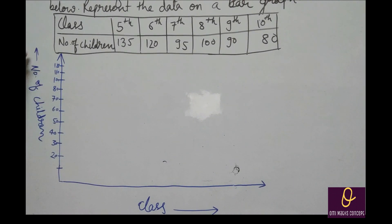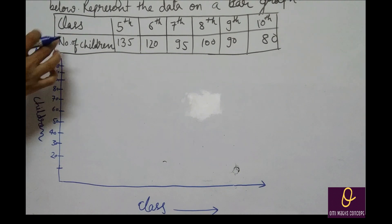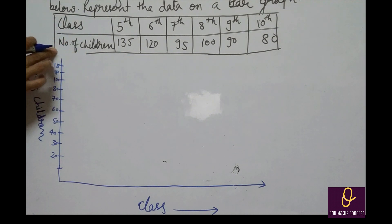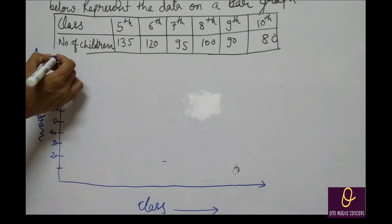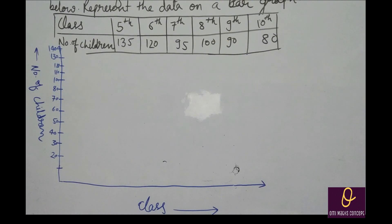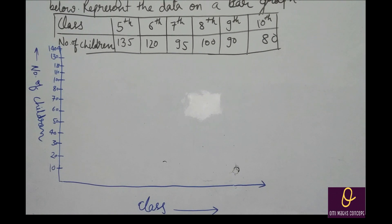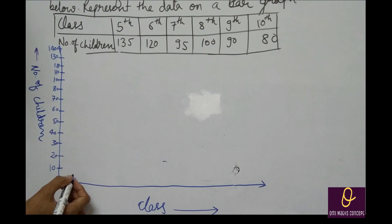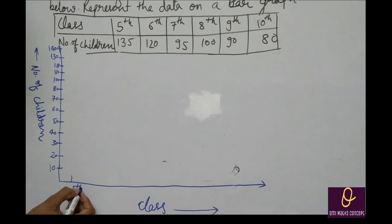आपके पास उपर और भी space मिलेगा. 135 है तो 140 तक चाहिए — 130 and 140. जब आप draw करेंगे: 10 से start किया, 10, 20, 30, 40. यहाँ पर आपको classes लेनी हैं. 5th class 135 — जो first box है उसमें 5th class 135.